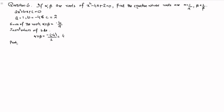Now we also know that the product of roots, which for the given equation is alpha beta, is equal to c over a. Inserting values of c and a, we can write that alpha beta equals 2 divided by 1, which is 2.